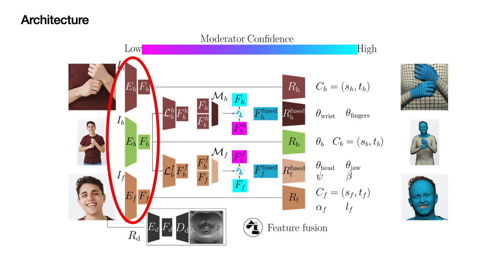The moderator is trained to predict a confidence score for each part from the part images. The confidence score is used to compute a weighted average of the body and part features.